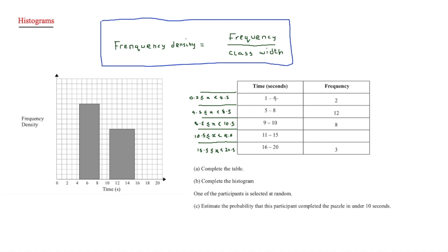To complete the table, we first work out what the frequency density scale represents. Looking at the interval 4.5 to 8.5, we know the frequency is 12 and the class width is 4, so frequency density = 12 ÷ 4 = 3. Counting the grid spaces confirms that every 5 spaces equals 1 unit on the frequency density axis.